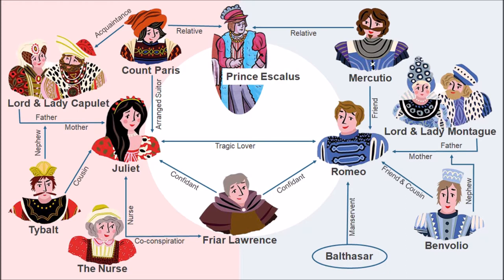First is Lord Capulet, who is the head of the Capulet family. Second is Lady Capulet, who is Lord Capulet's wife. Third is Juliet, who is Lord and Lady Capulet's daughter. Fourth is Tybalt, who is Lord Capulet's nephew and cousin of Juliet. Fifth is Lord Montague, who is the head of the Montague family. Sixth is Lady Montague, who is Lord Montague's wife. Seventh is Romeo, who is Lord and Lady Montague's son. Eighth is Benvolio, who is Lord Montague's nephew and Romeo's friend. Ninth is Mercutio, who is Romeo's friend and kinsman of Escalus.